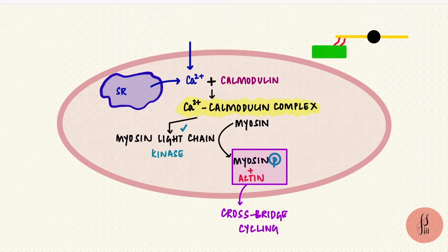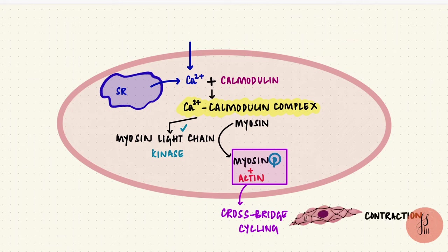The hinge of myosin bends, dragging the actin filaments along with them, resulting in muscle contraction. So the smooth muscle finally contracted.